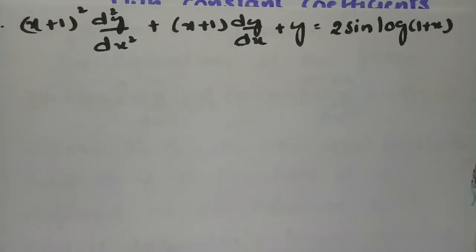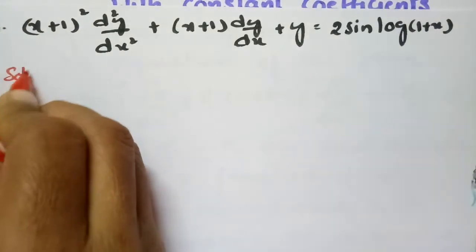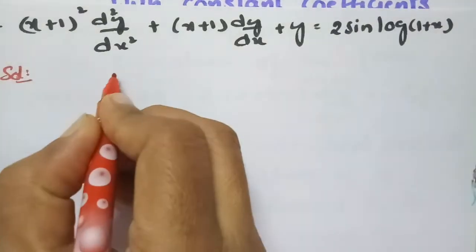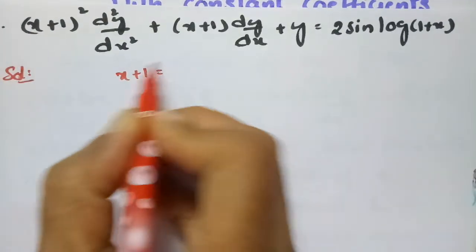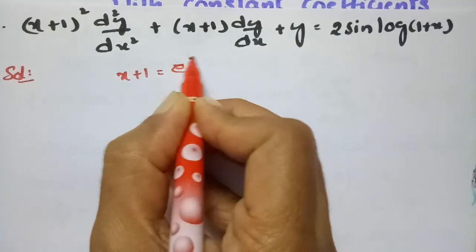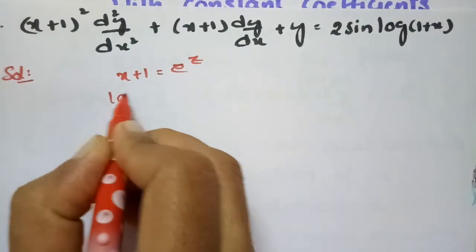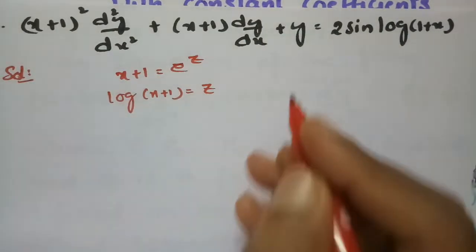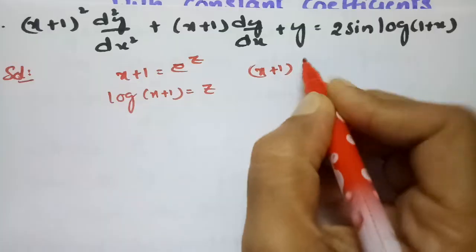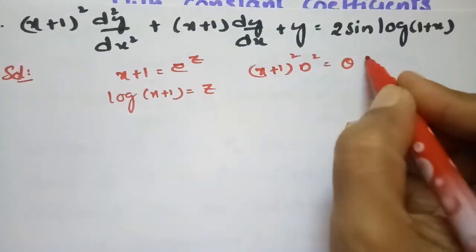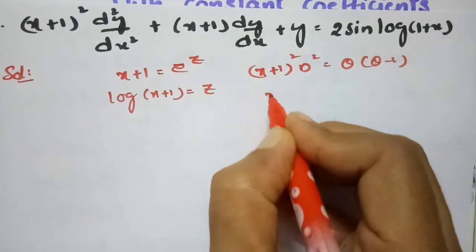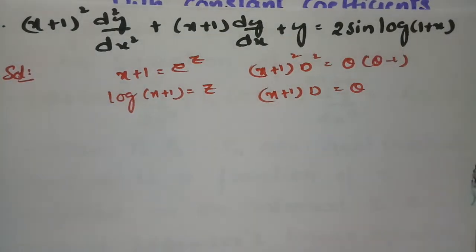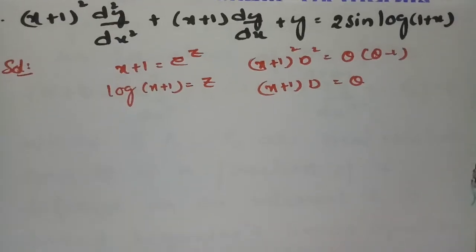This is also a most important question. As it is the Legendre's Differential Equation, there is a substitution. We have to set (x + 1) equal to e^z, and next, log(x + 1) equals z. See here: (x + 1)² · d² equals θ(θ - 1), and (x + 1) · d equals θ. So all these substitutions are made in the question.